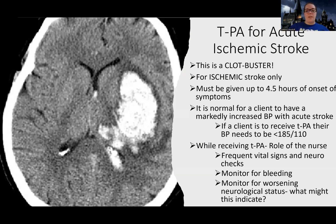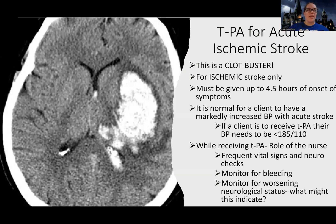As a nurse giving TPA, I want to do frequent vital signs and neurological checks — monitoring their mental status and watching for bleeding. The biggest side effect is bleeding. Patients will ooze a little from IV sites, but there should be no profuse bleeding from anywhere. If you've watched my NIH stroke scale video, I covered a scenario involving a patient who received TPA and whose NIH score increased.